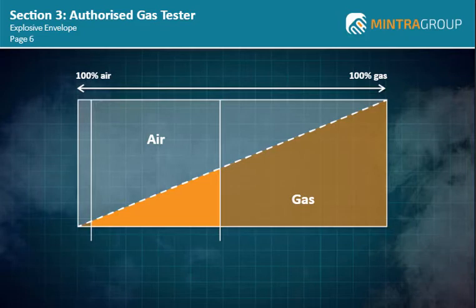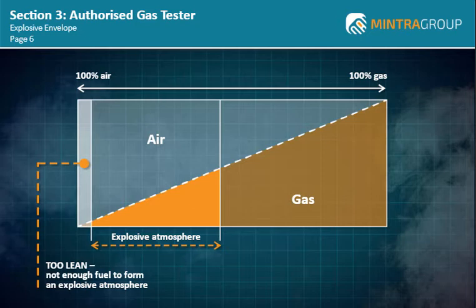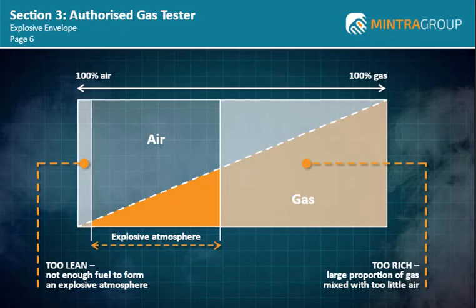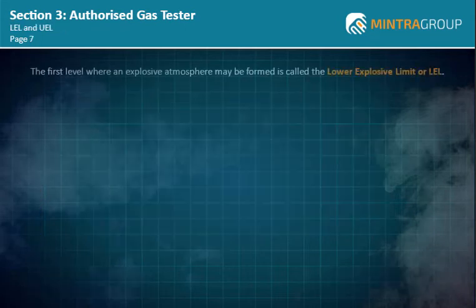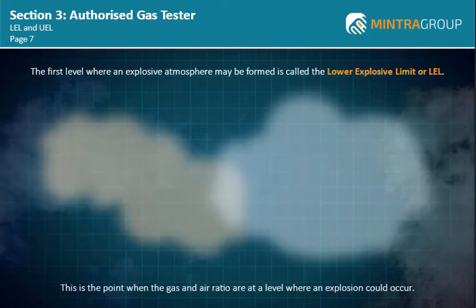When gas and air are mixed in a certain ratio, they can form an explosive atmosphere. If there is too much air, the gas and air mix will be too lean, as there will not be enough fuel to form an explosive atmosphere. However, if there is a large proportion of gas mixed with too little air, this is considered too rich and again will not form an explosive atmosphere. The first level where an explosive atmosphere may be formed is called the Lower Explosive Limit, or LEL — this is the point when the gas and air ratio are at a level where an explosion could occur.